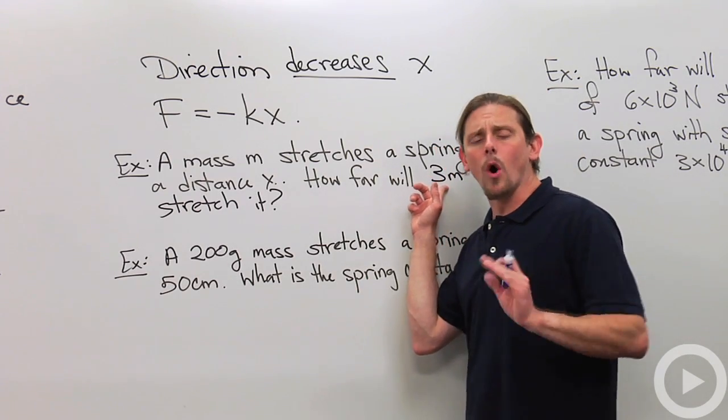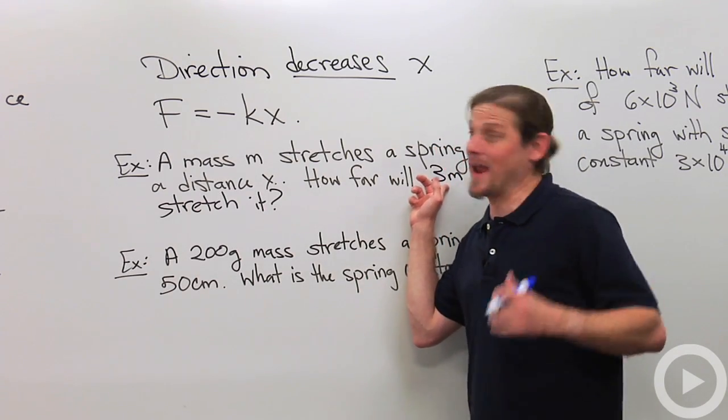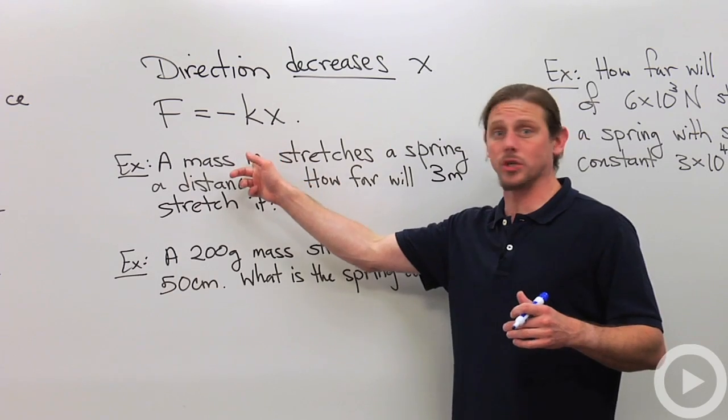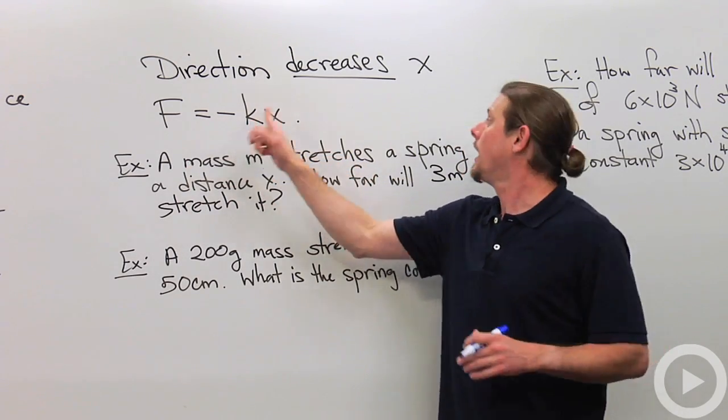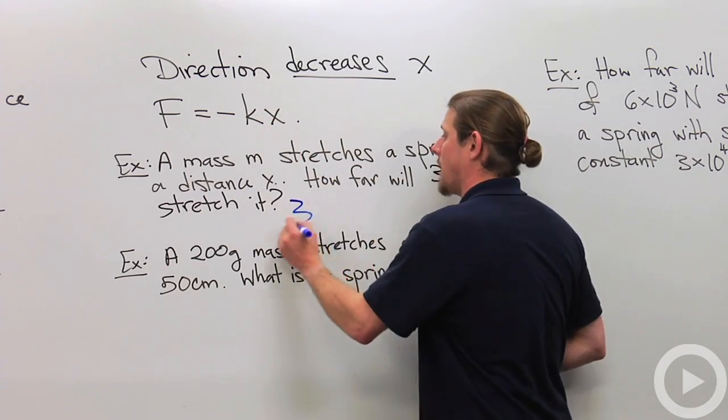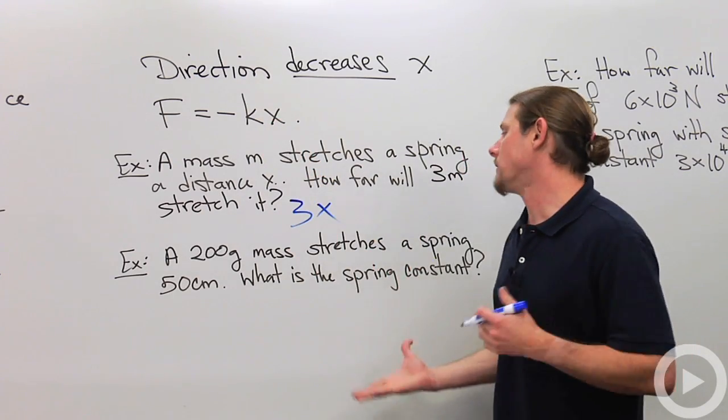Look, 3M is going to give a force, its weight, of three times as much as M. So if the force is three times as much, the spring constant is constant, it means X got to be three times as much. Easy enough. Let's go to the next one.